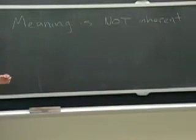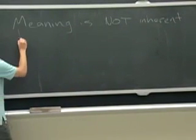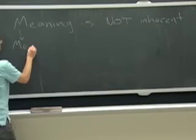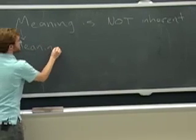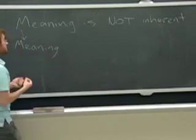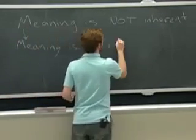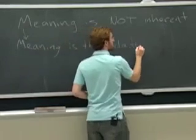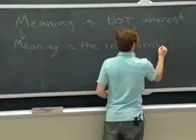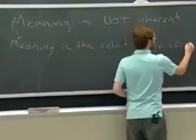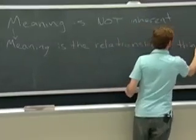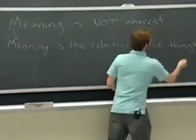And to expand on this, and this is what Hofstadter calls the jukebox theory of meaning. Meaning is the relationship of things. But what does that mean?